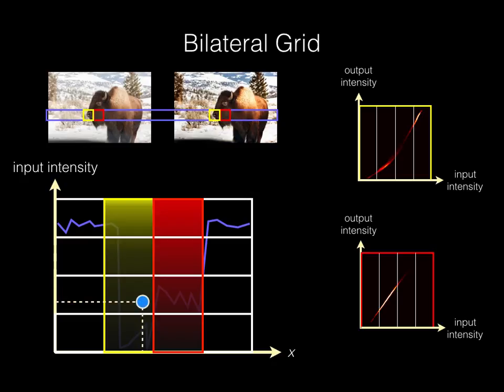For a pixel with a particular intensity, a nearby pixel with similar intensity should map to a similar output, otherwise we would create false edges in the output. This 2D grid is in fact the bilateral grid as used in edge-aware filtering, except instead of a single value at each cell, it now contains the two parameters of a line fit.